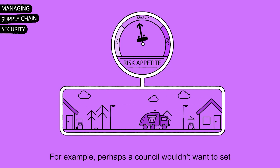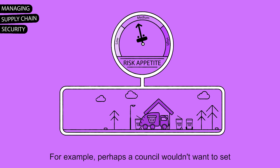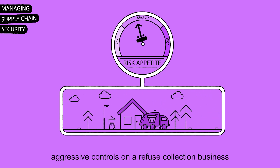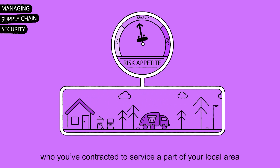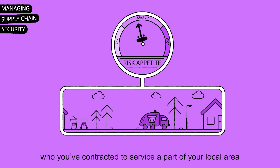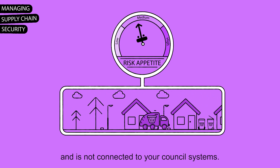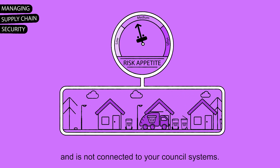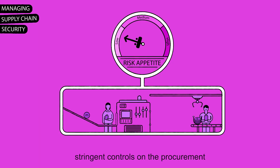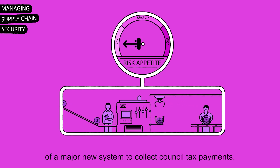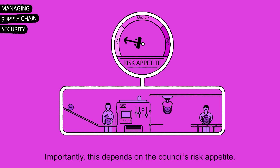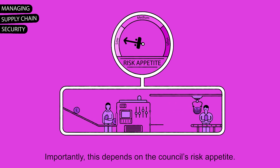For example, perhaps a council wouldn't want to set aggressive controls on a refuse collection business who you've contracted to service a part of your local area and is not connected to your council's systems. But it would want to set more stringent controls on the procurement of a major new system to collect council tax payments. Importantly, this depends on the council's risk appetite.